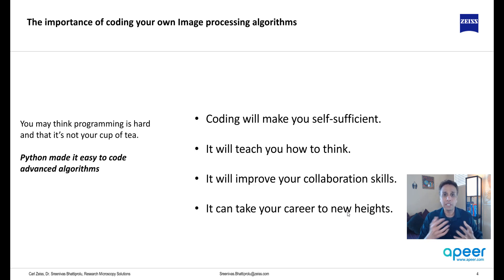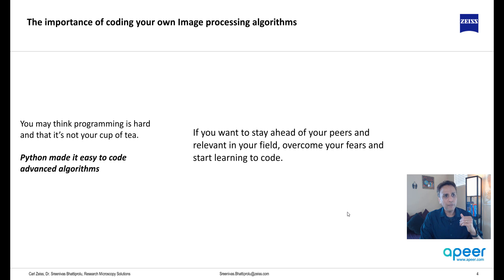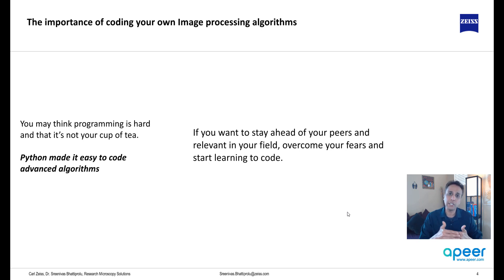Coding teaches you how to think — if you want to write a piece of code to do some task, you have to think about how to structure it, so it definitely helps you think better. It also improves your collaboration skills, because you will get stuck at some point and have to work with others to figure out the solution, whether they are partners in your lab or someone online willing to help. And of course it takes your career to new heights. There may be 10,000 or more life scientists, material scientists, or geologists, but what separates you from the rest is not just preparing samples and interpreting results — coding adds to those skills too.